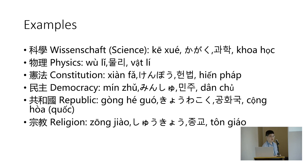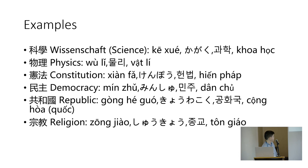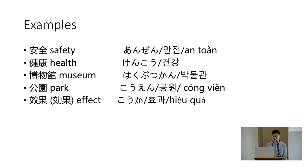In different East Asian languages you have the same characters for: physics, constitution, democracy, republic, and even 'religion' — because East Asia didn't have a general term for religion, only specific ones like Confucianism or Buddhism. The general term really came from Japan translating from Western countries. Basically they have the same characters, but if you listen to the pronunciation, they differ a bit.